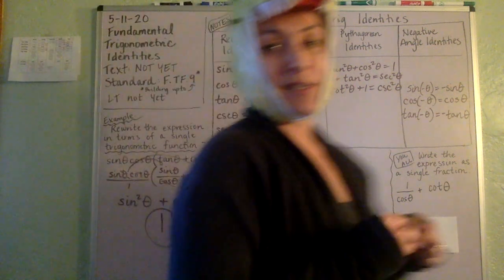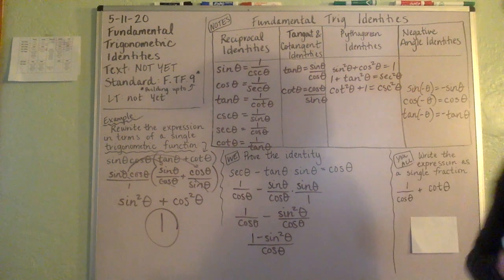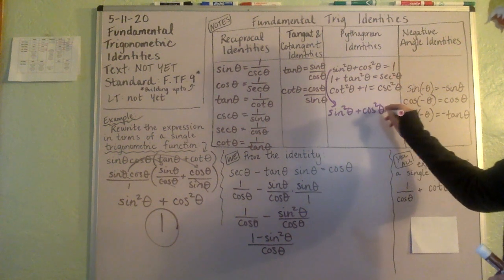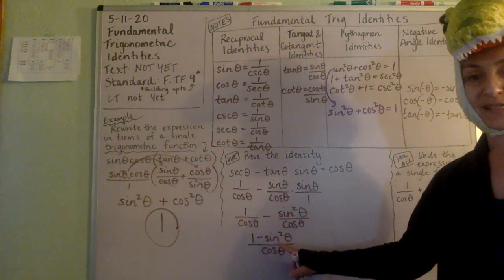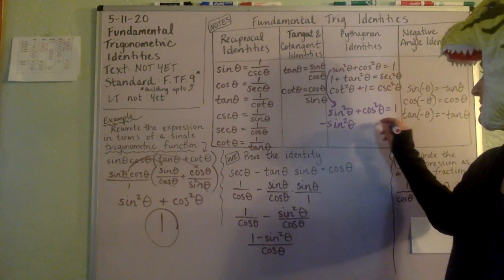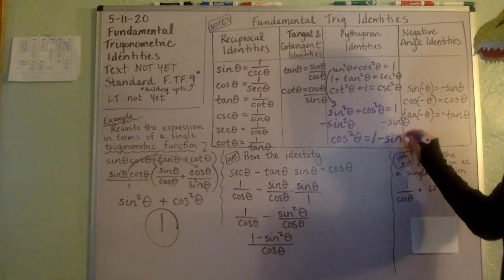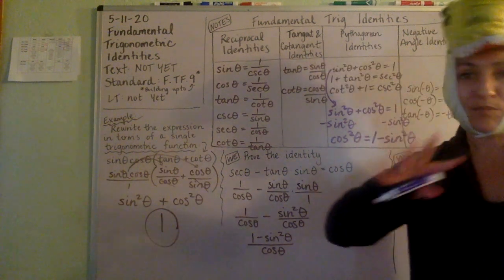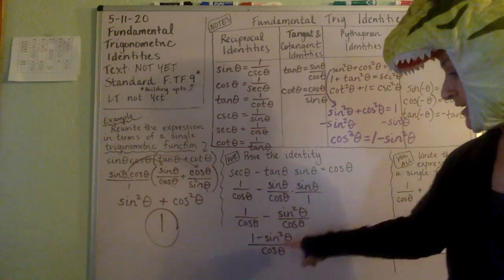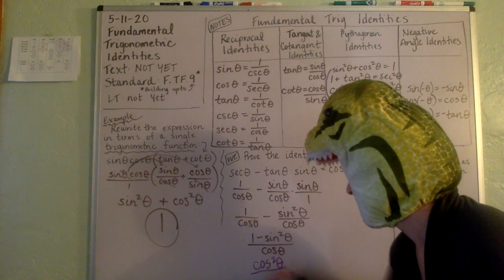Now look at the numerator — we have one minus sine squared theta. Remember the Pythagorean identity: sine squared plus cosine squared equals one. If you subtract sine squared from both sides, you get cosine squared equals one minus sine squared theta. So one minus sine squared theta is actually equivalent to cosine squared theta. That means we can replace the numerator to get cosine squared theta over cosine.